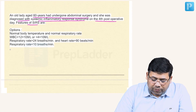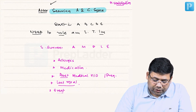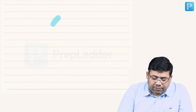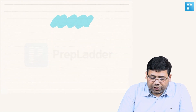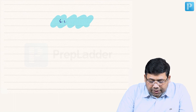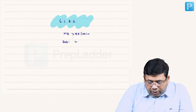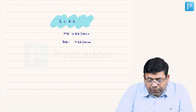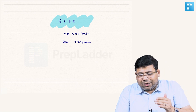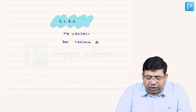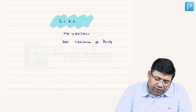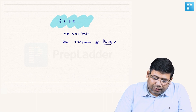SIRS consists of 4 important parameters. SIRS stands for Systemic Inflammatory Response Syndrome. The parameters are: heart rate more than 90 per minute, and respiratory rate more than 20 per minute — or due to this increased respiratory rate, there will be falling PaCO2, so PaCO2 less than 30 mmHg.